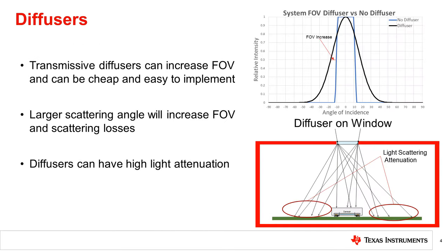So how can a transmissive diffuser help increase a light sensor's field of view? Since a diffuser scatters light in many directions, the sensor reading is a combination of light hitting it at many angles along its angular profile, not just the original angle of incidence. This has the effect of smoothing out the angular response of the system, making the highs and lows come closer together. Look at the displayed graph where the angular profile of a system changes before and after applying the narrow 15 degree diffuser. The field of view is increased by 18 degrees with the diffuser.